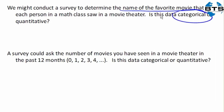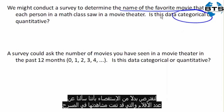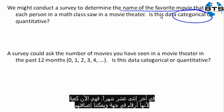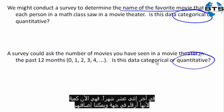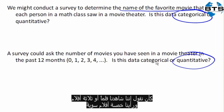Now suppose instead the survey asked the number of movies they had seen in a movie theater in the last 12 months. That is now quantitative, because those are numbers, and we can add them. So if I saw two movies and you saw three, then together we saw five movies — addition makes sense here.